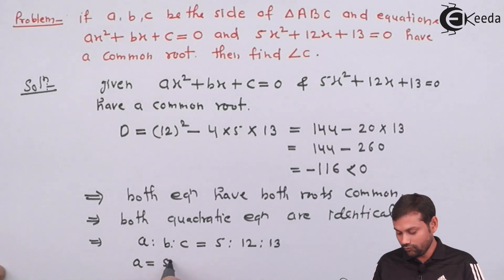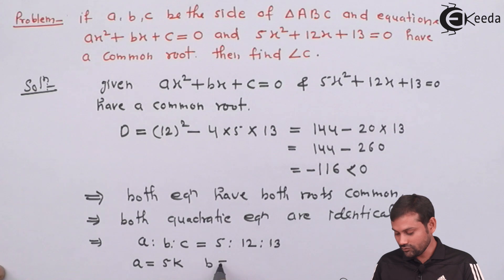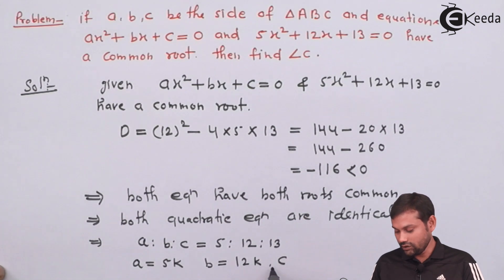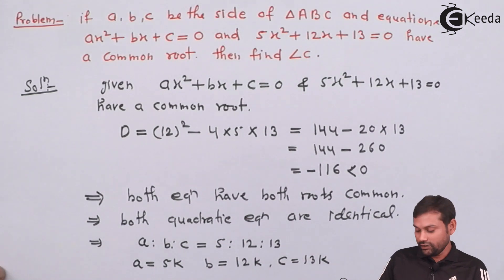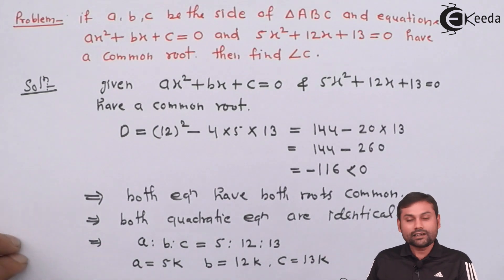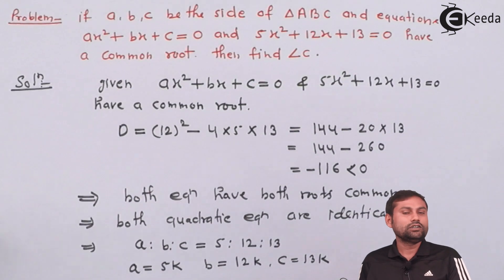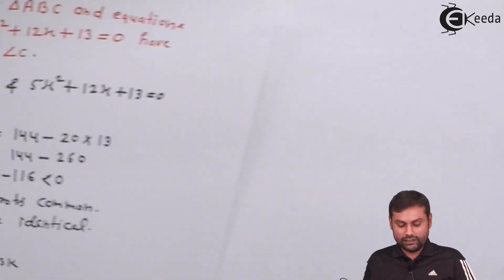A is equal to 5K. B is equal to 12K. And C is equal to 13K. Okay? So, we have taken the side of the triangle. We have taken the relation of the triangle.